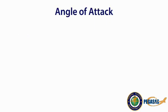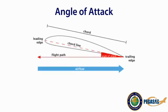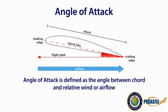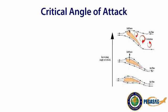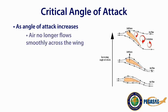To better understand these devices, let's look at what angle of attack is. Angle of attack is defined by two references: the chord line, which is an imaginary line drawn from the leading edge to the trailing edge of an airfoil, and the relative wind, shown in this picture by the arrow marked Airflow. Relative wind is equal and opposite to the flight path of the aircraft. The angle of attack is the angle between the chord line and the relative wind. The critical angle of attack is the point at which, as the angle of attack increases, air will no longer flow smoothly over the wing, causing the airflow to separate from the surface and resulting in a stall.